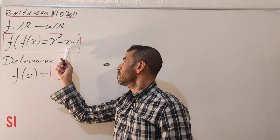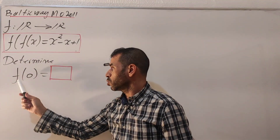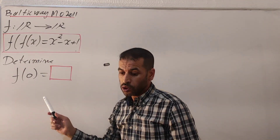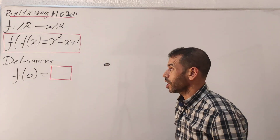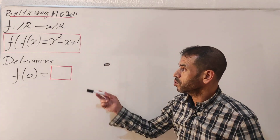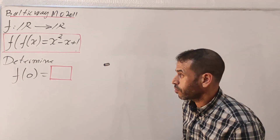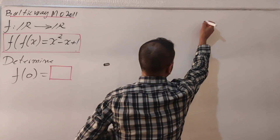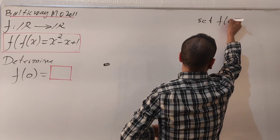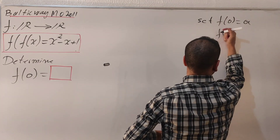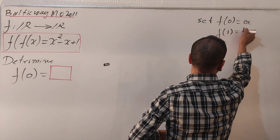The question is we are going to determine f of zero. This is a very straightforward question, it's not hard at all. I'm going to apply some tricks in order to calculate f of zero. Let's set f of zero equals a and f of one equals b.